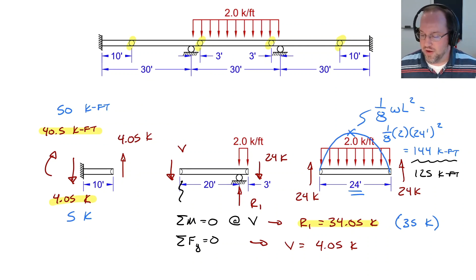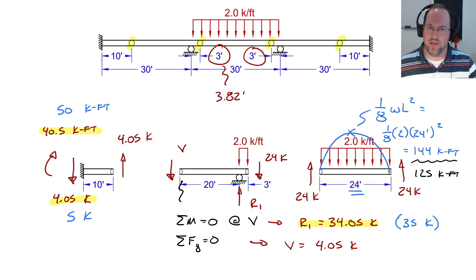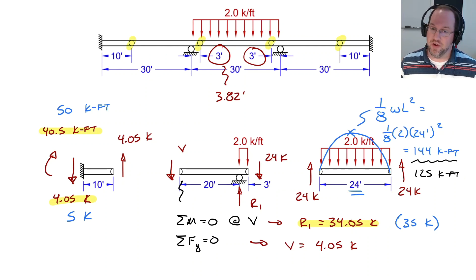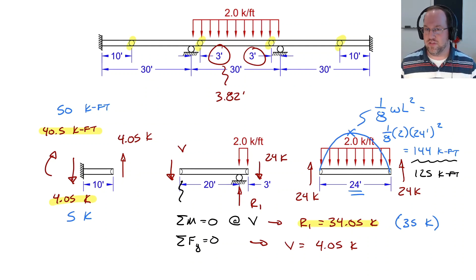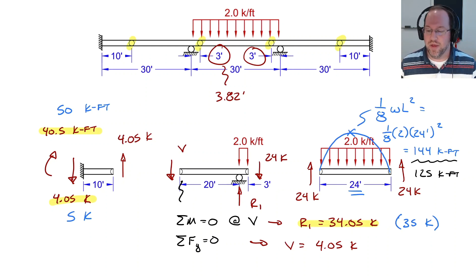If we wanted a slightly better estimate, the actual inflection point distances are about 3.82 feet from their supports, not 3 feet. Had we assumed 4 feet, we'd have gotten a slightly better approximation. That wraps up our discussion of approximate beam analysis. The whole premise is to find locations of zero moment — the inflection points — place hinges there equal in number to the degree of indeterminacy, and then solve a determinate system. As always, I hope you learned something. Please subscribe, and I'll see you next time.